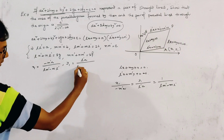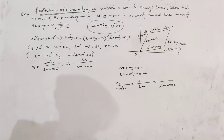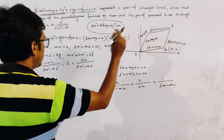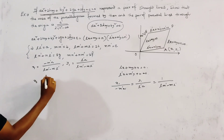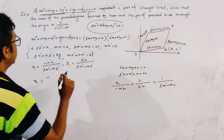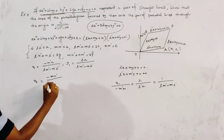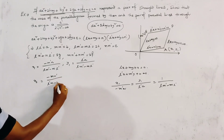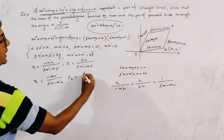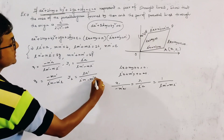Similarly, we find the point of intersection B = (x₂, y₂): x₂ = −mn' / (l'm − m'l) and y₂ = ln' / (l'm − m'l). So we obtain both intersection points A and B.